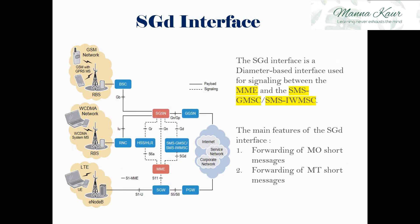The SGD interface is between the SMSC and the MME. It handles SMS, short message service. Its two main features are: first, forwarding of mobile-originated short messages from the MME to the SMSC; and second, forwarding of mobile-terminated short messages from the SMSC to the MME. This interface is also used for signaling.